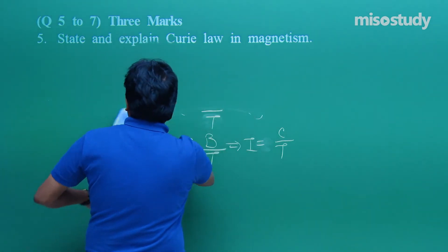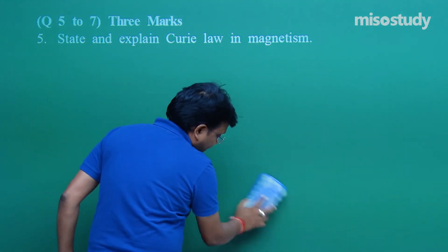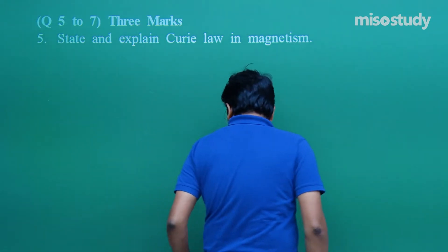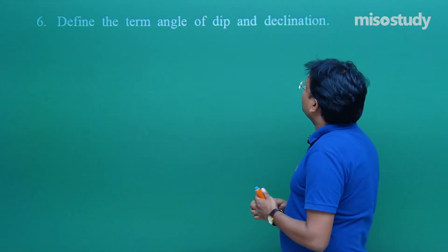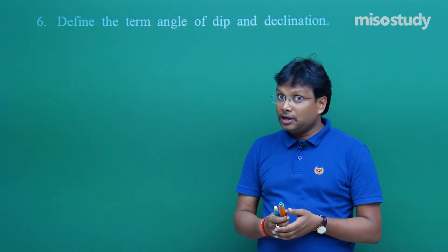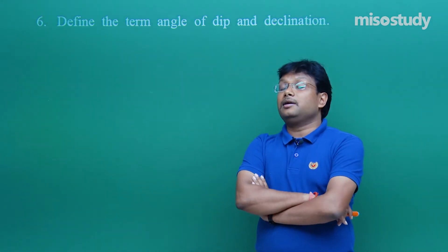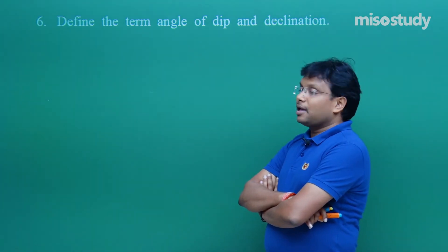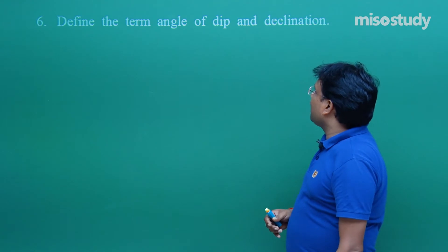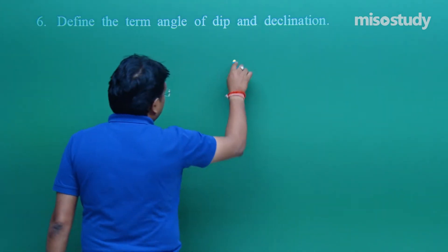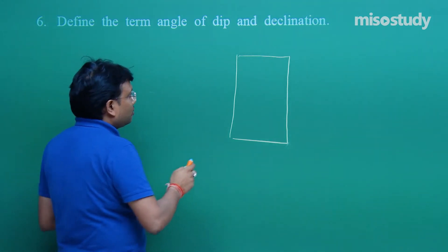Then comes question number 6: define the term angle of dip and declination. There is one video in this chapter where I prepared the elements of Earth's magnetic field, explaining with diagrams all terms — angle of dip, angle of declination, horizontal component, and so on.